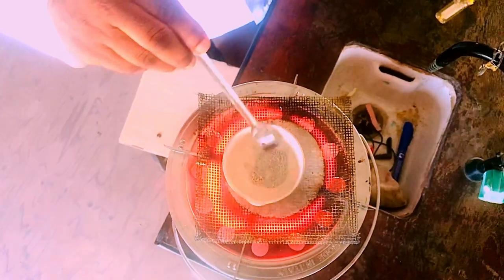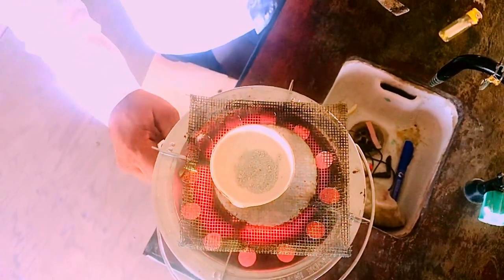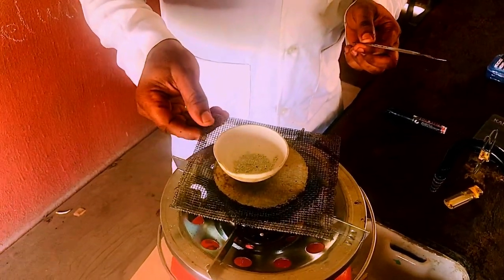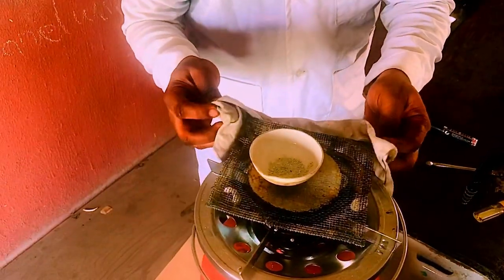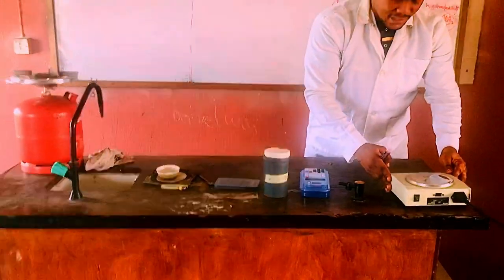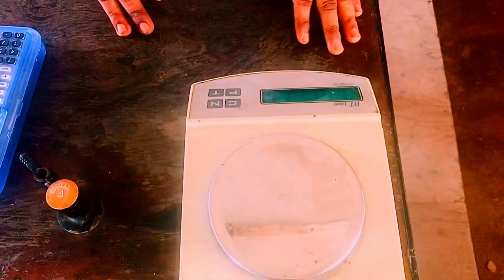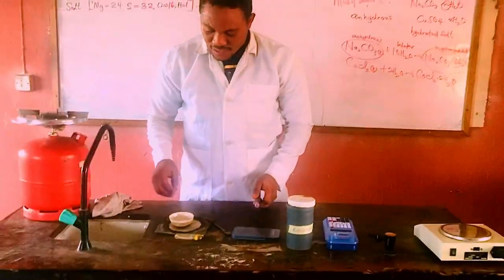All the blue color has changed to white, so we can stop heating. Let's bring the evaporating dish down and allow it to cool. We must wait for it to cool before re-weighing so that we get a stable, constant reading on the electronic balance.